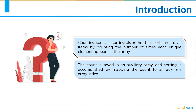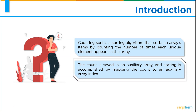A counting sort is a sorting algorithm that sorts the elements of an array by counting the number of occurrences of each unique element in the array. The count is stored in an auxiliary array, and the sorting is done by mapping the count as an index of that auxiliary array.